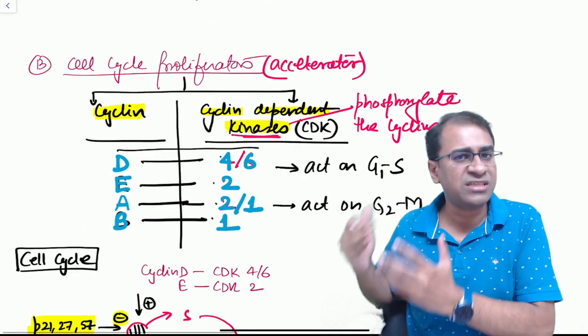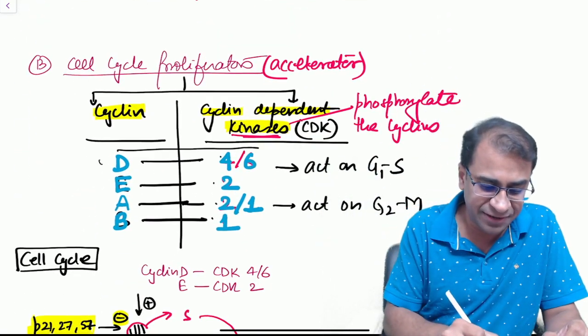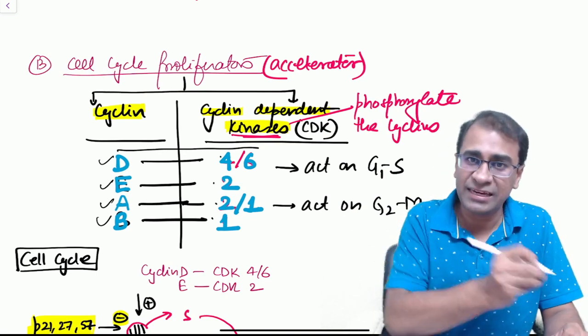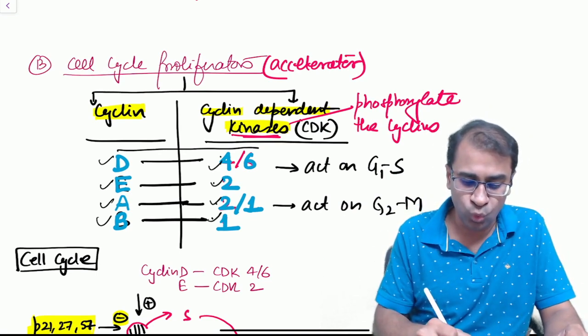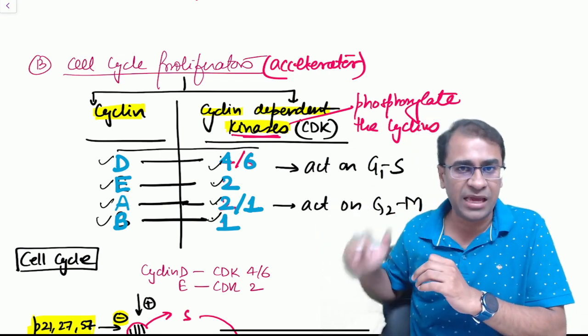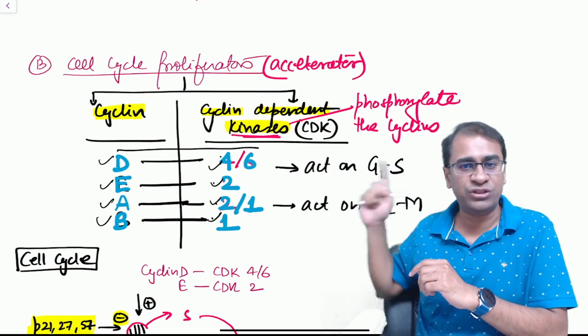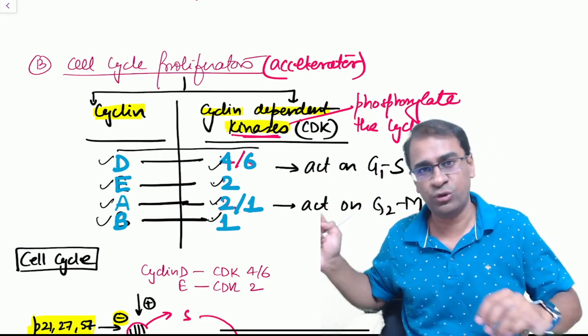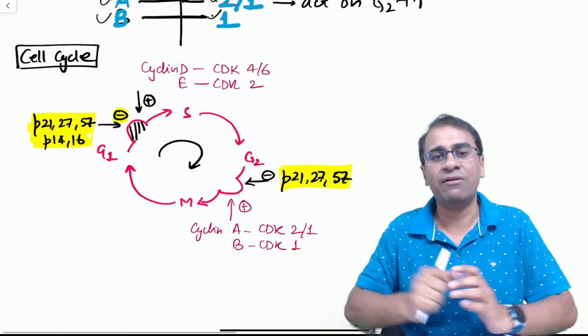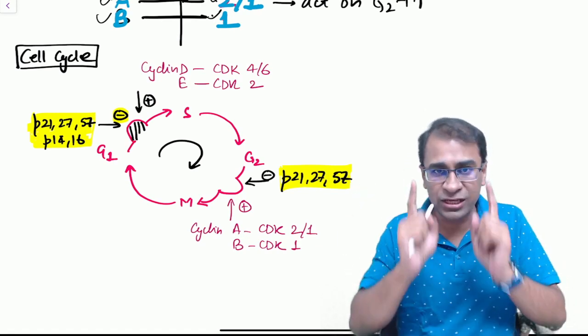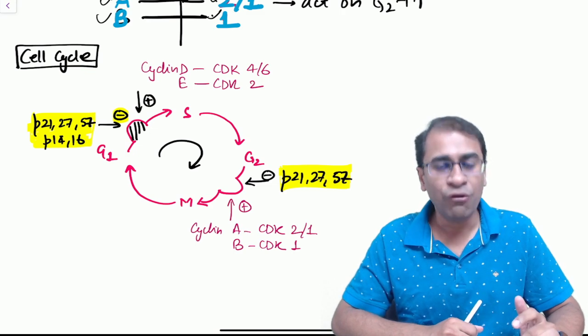The proliferators are very simple to remember. In cyclins it is cyclin D, E, A, B, and the cyclin-dependent kinases which will activate them are 4, 2, 2, 1. Remember the sequence: D-E-A-B, 4-2-2-1. The first two act on G1-S phase, the next two act on G2-M phase. This is how they will act on G1-S and on G2-M phase. This is very important, ensure you remember this during the exams.